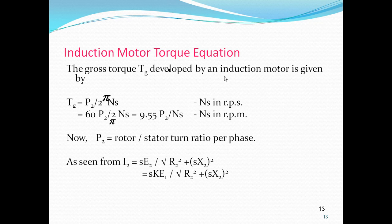When load increases slowly, speed decreases and slip increases. For very small values of slip, X2 is very small compared to R2, so torque is proportional to slip — meaning for low values of slip the torque-slip curve is a straight line.